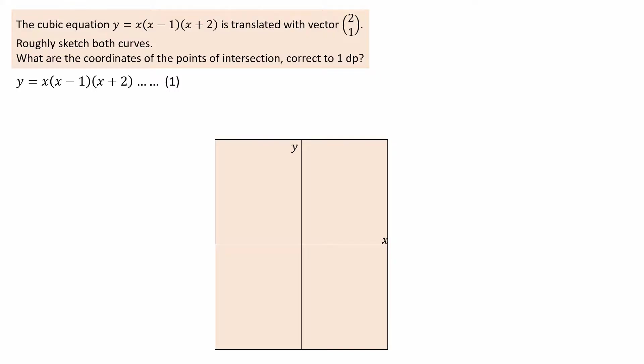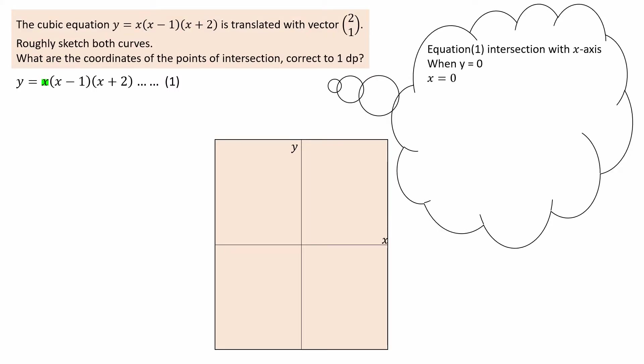First, label the equation as 1. To make a sketch, first find the points of intersection with the x-axis. When x equals 0, y equals 0, so the curve cuts the x-axis at the point (0, 0).